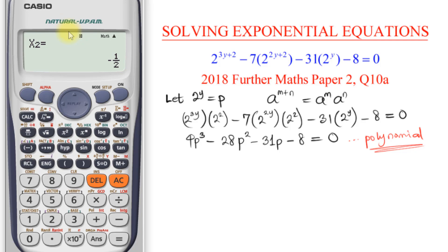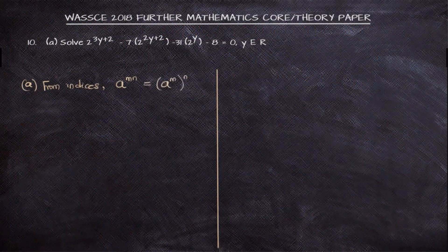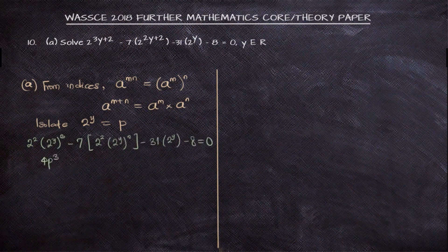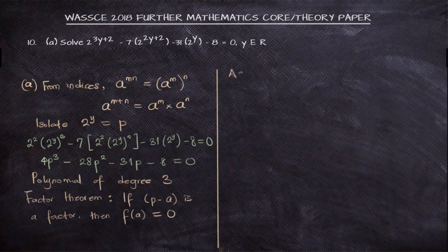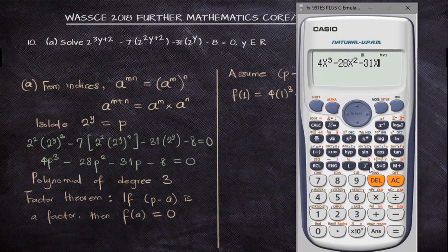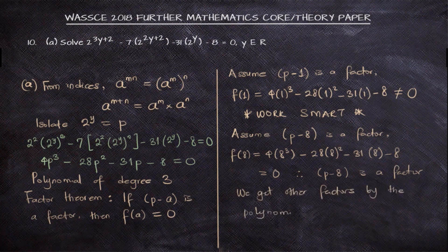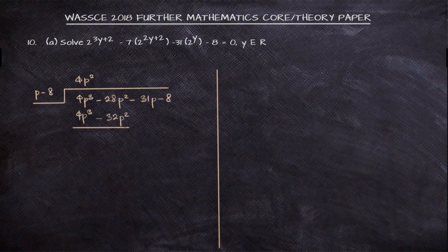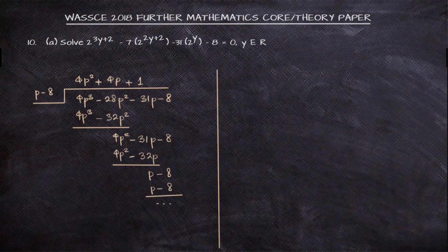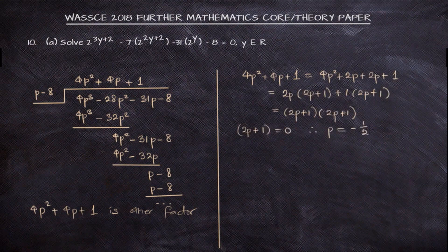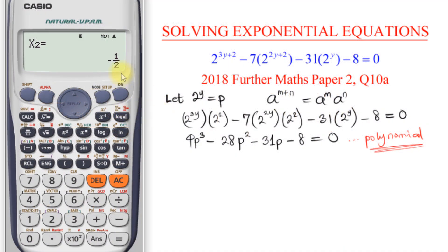I have solved this question before in working through the 2018 past question in further mathematics — you can check out that solution where I solved without a calculator, getting my hands dirty and working through everything. From that, I know that minus 2 is the root occurring twice.